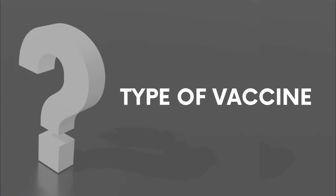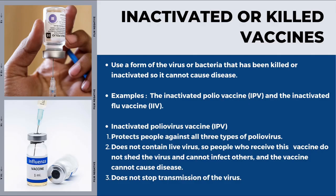For your information, there are many types of vaccines. First of all, inactivated or killed vaccines. These use a form of the pathogen that has been killed or inactivated so it cannot cause disease. For example, the inactivated polio vaccine and the inactivated flu vaccines, which do not contain live virus.